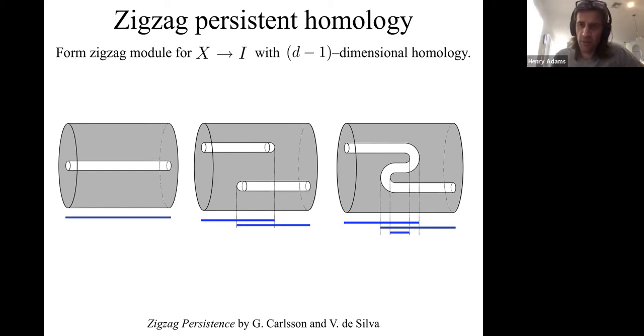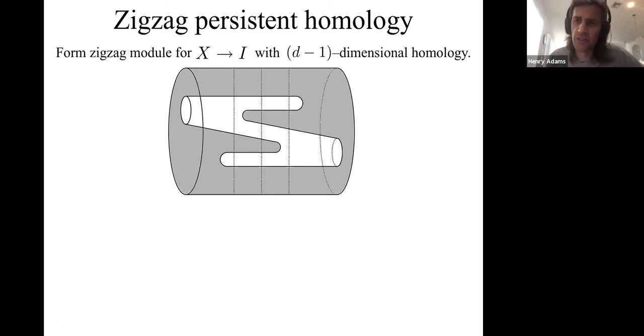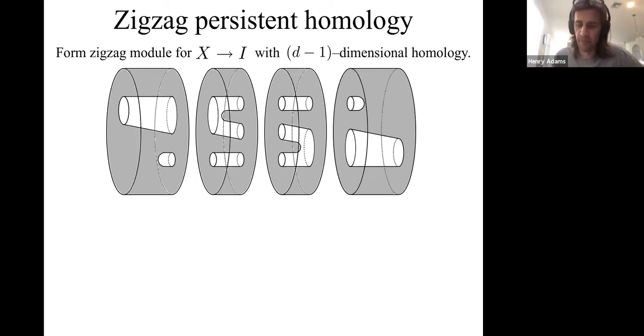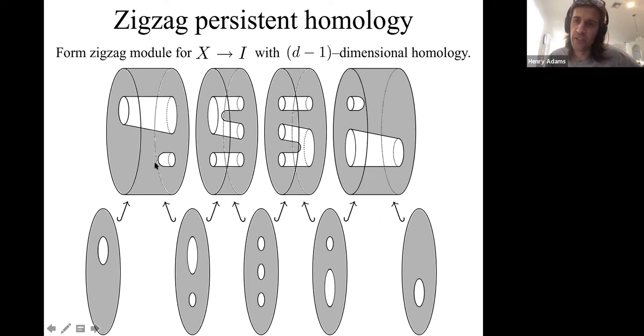To say a bit more about zigzag persistence and how you can use it here, take your covered region in space-time and chop up time into bits. We've subdivided time. Now include each slice in time into the next interval in time, which contains the next slice in time, which includes into the next interval in time. You see how we have a small space including into a larger one, which contains a smaller space, includes into a larger one. This is how our space is not just growing, but growing and then getting smaller, growing and then getting smaller, growing and then getting smaller.